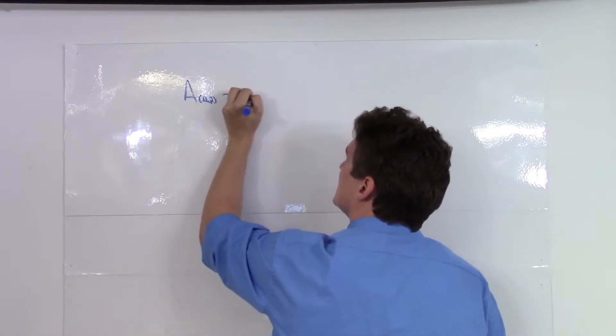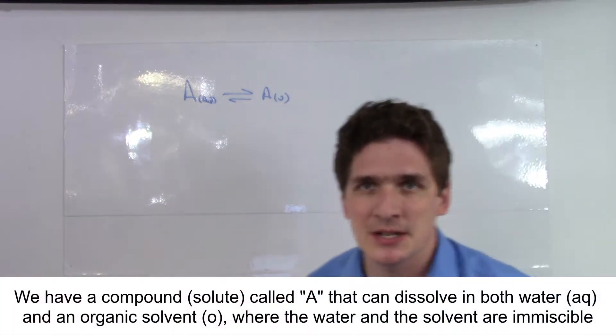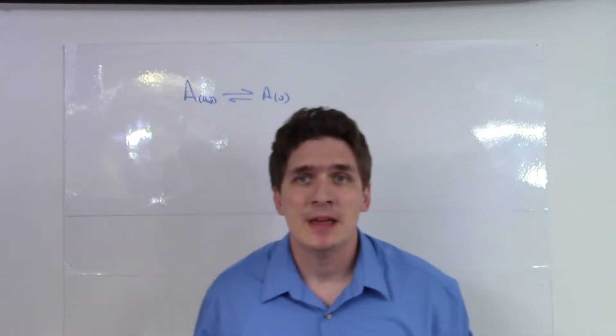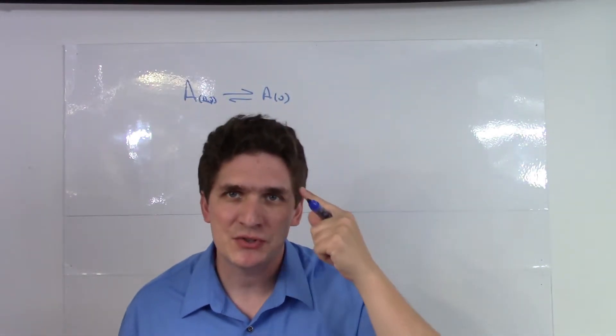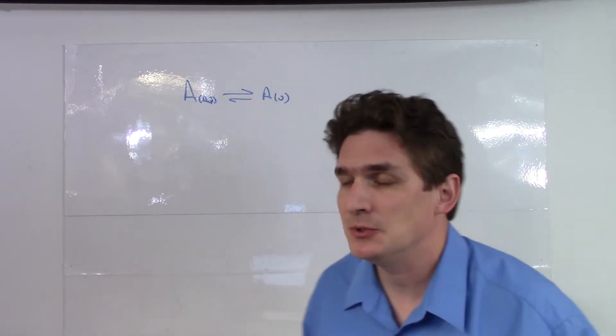We're going to say it exists in two phases. An aqueous phase, and we'll put a subscript O for an organic phase. So it's dissolved between two phases and it exists at equilibrium. And hopefully as an organic student, this has tipped you off. There is an equilibrium constant associated with each equilibrium.